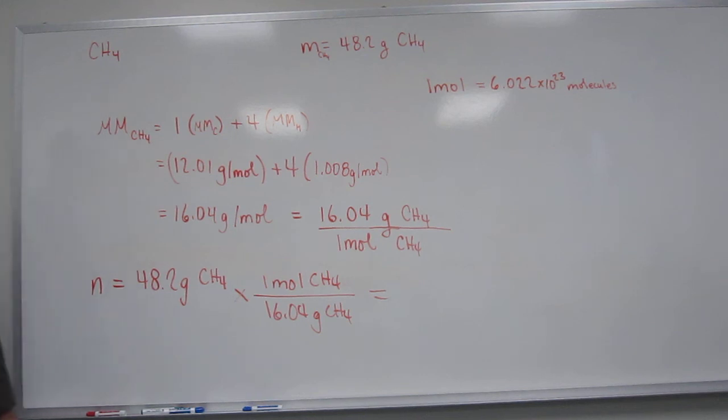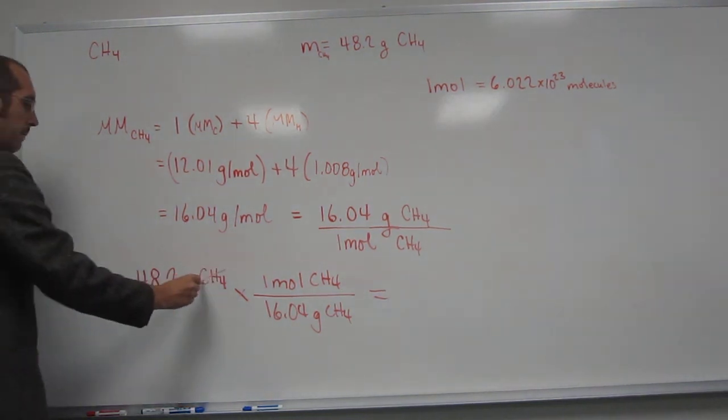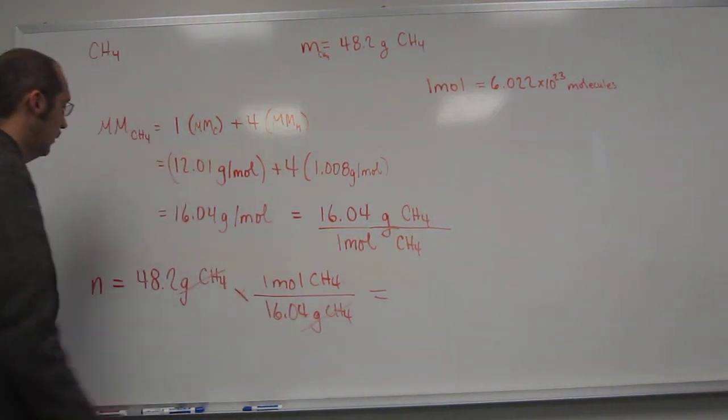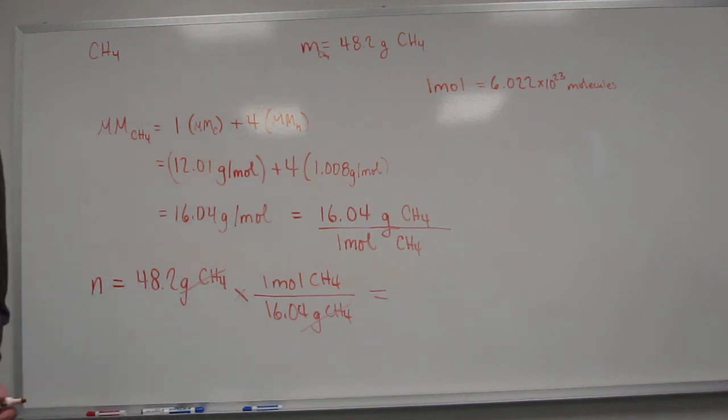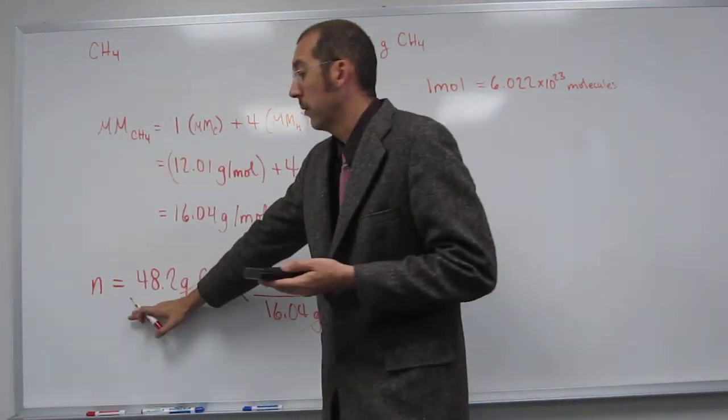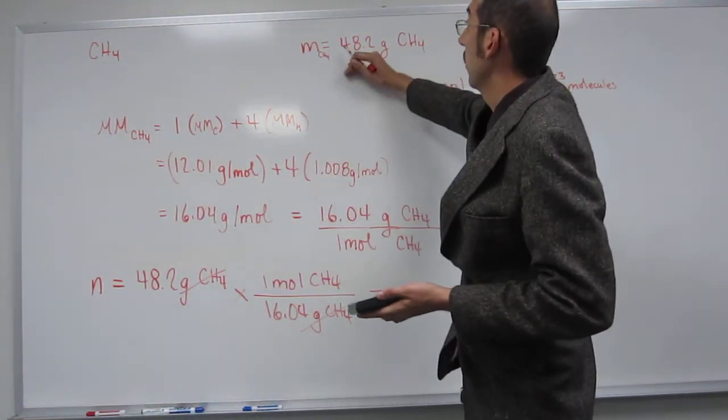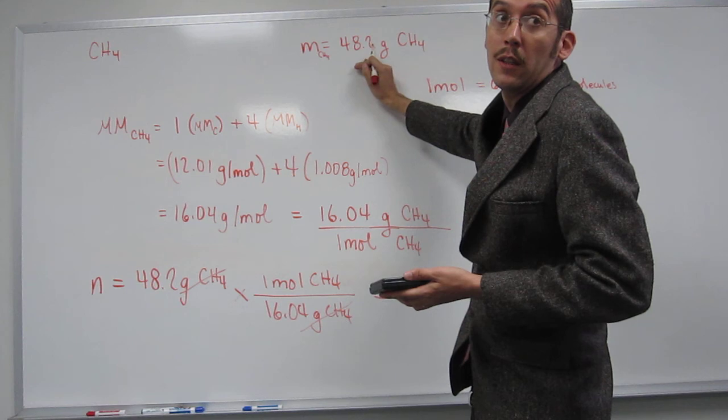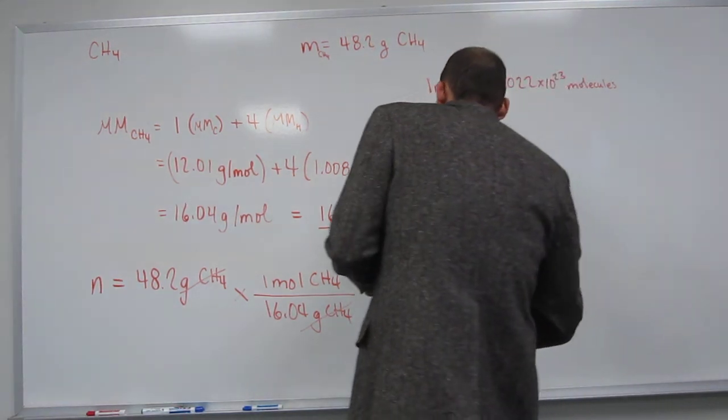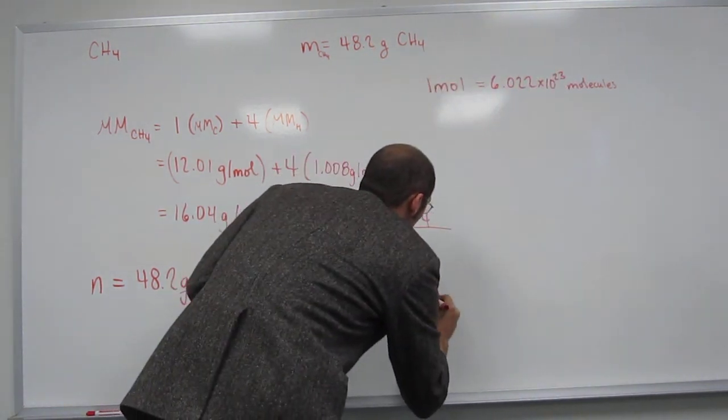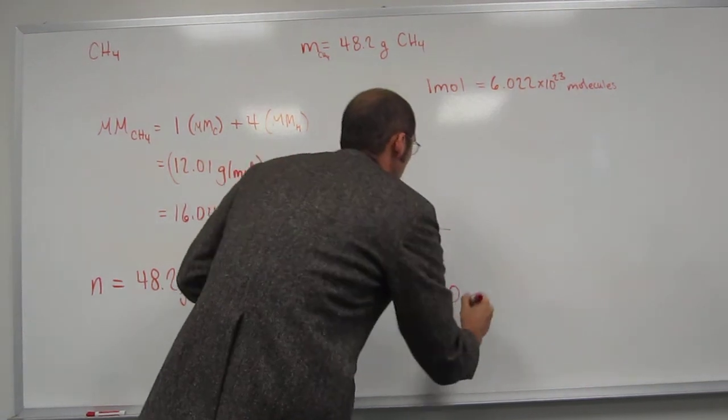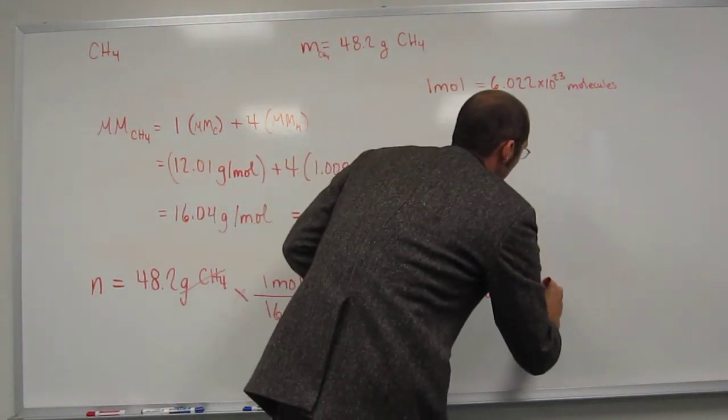Okay, so can we cancel something out here? Grams of methane, cancel cancel. 48.2 divided by 16.04. So if we take it to three sig figs, which we need to because that was the only number that was given to us in the problem, it's going to be 3.00 moles of methane.